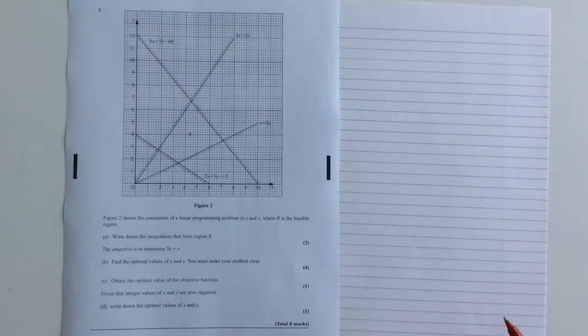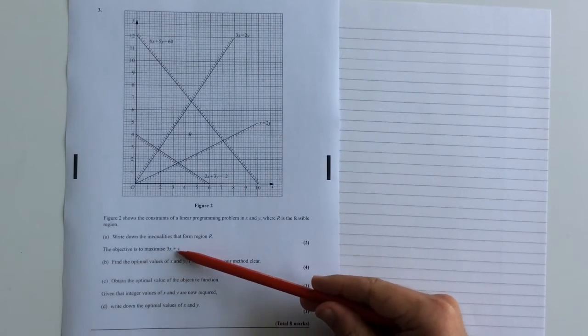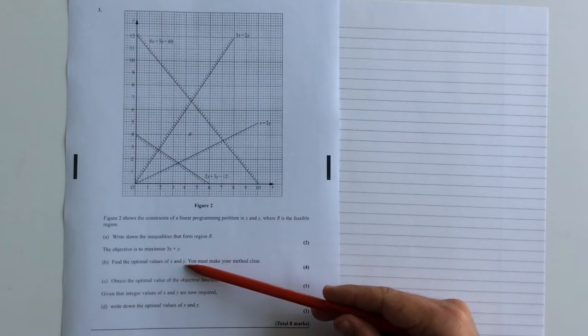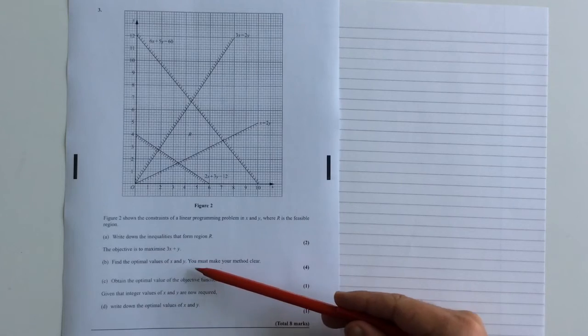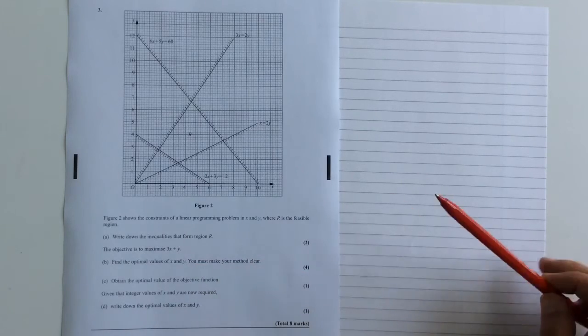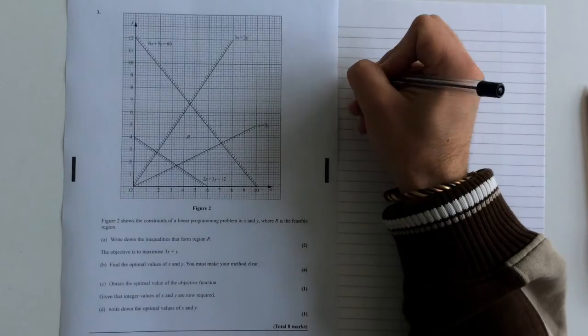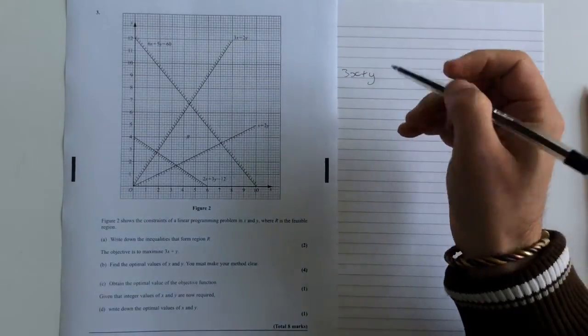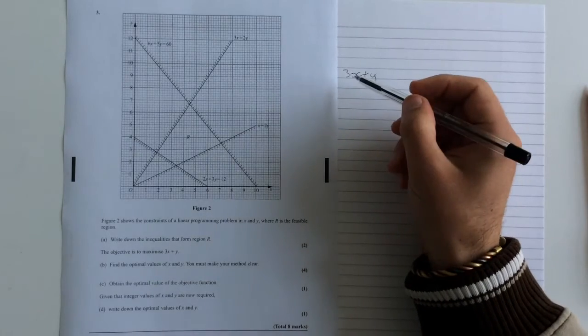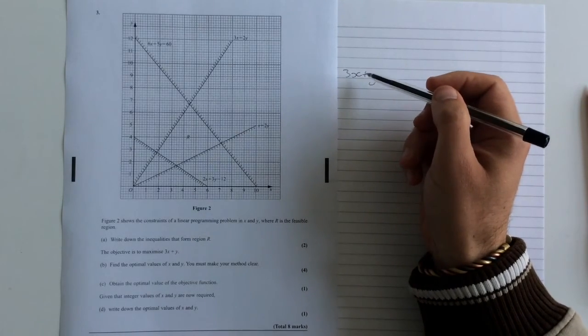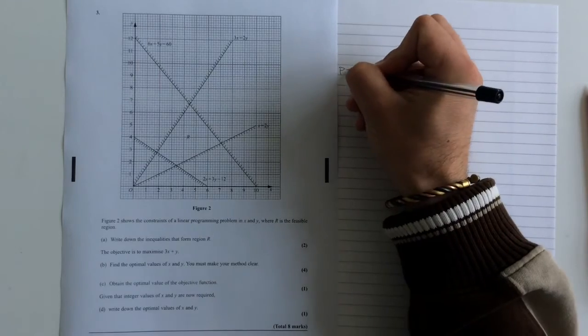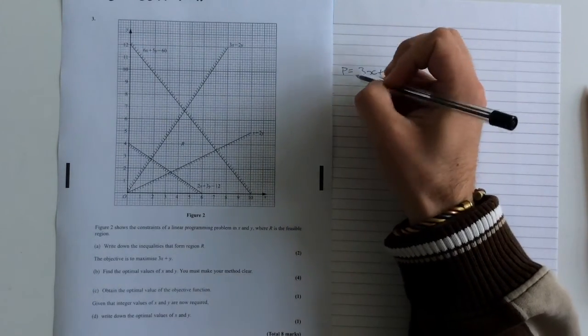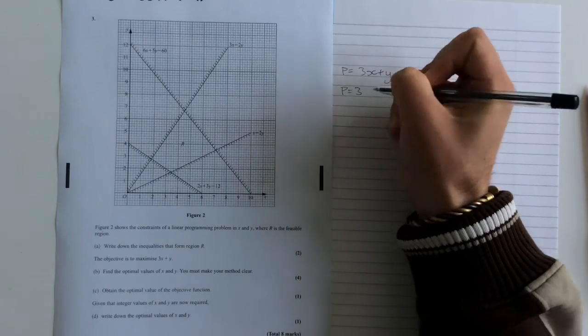For the next part of the question, it tells us that we're going to be maximizing 3x plus y, and we're asked to find the optimal values of x and y. We've got to make our method clear. So what we're going to do is we're going to take this expression, 3x plus y, and then we're going to think about what's going on with that. Now we don't know what the objective function is representing, but let's say it was profit or something like that. We're going to choose a value for profit, so I'm going to just choose p equals 3.